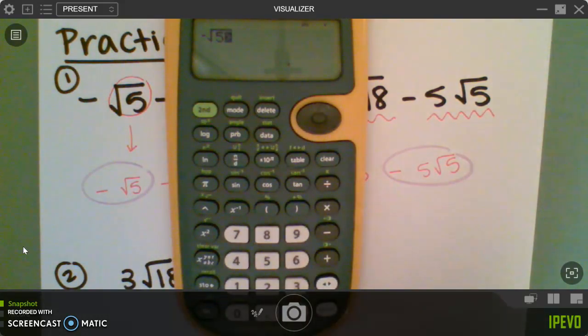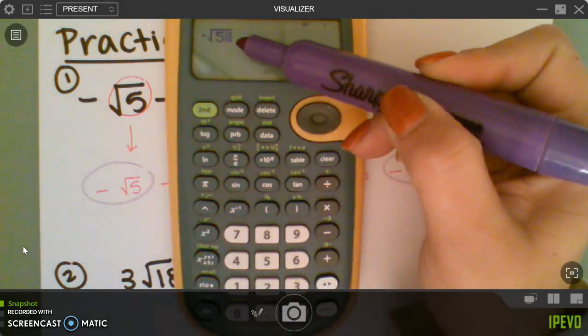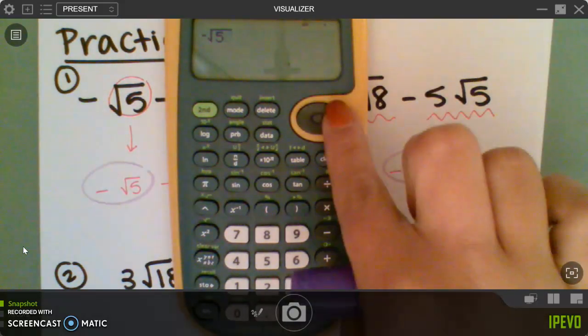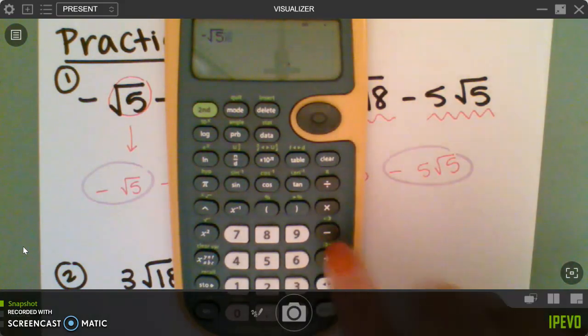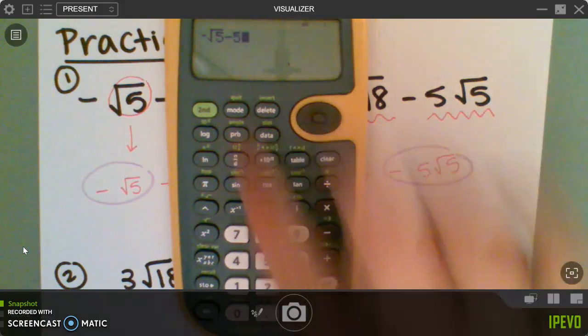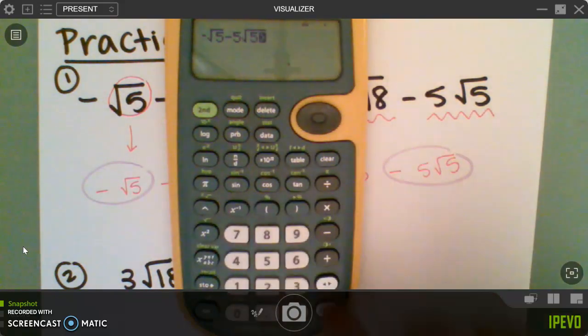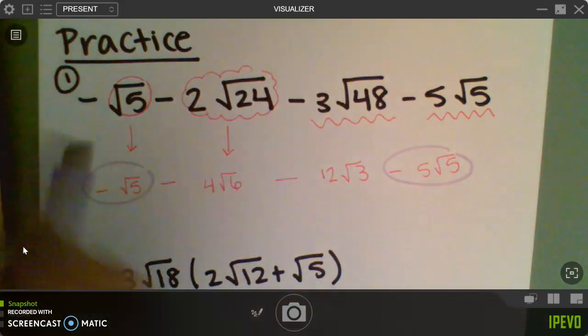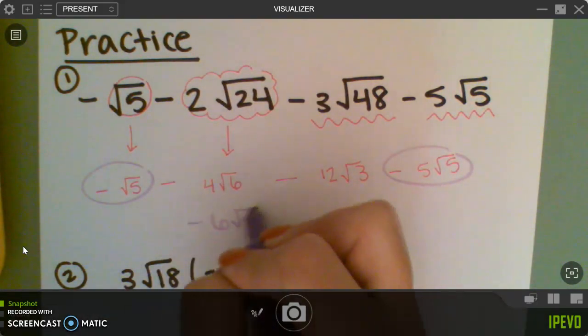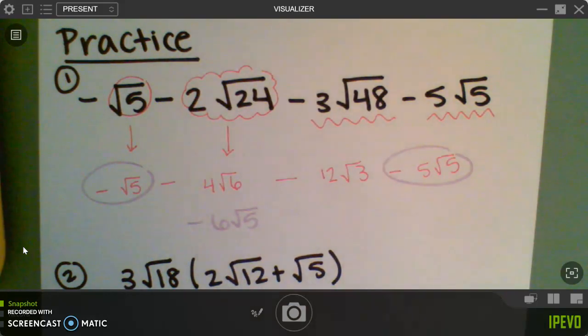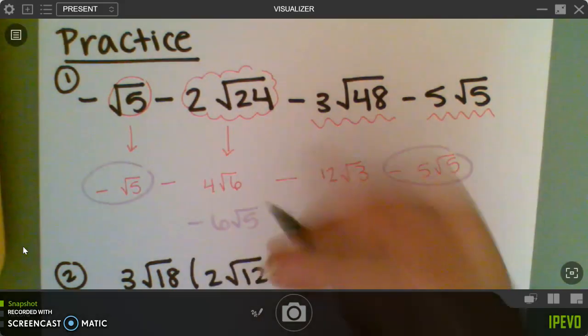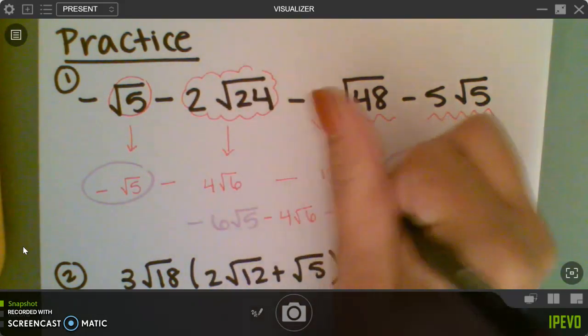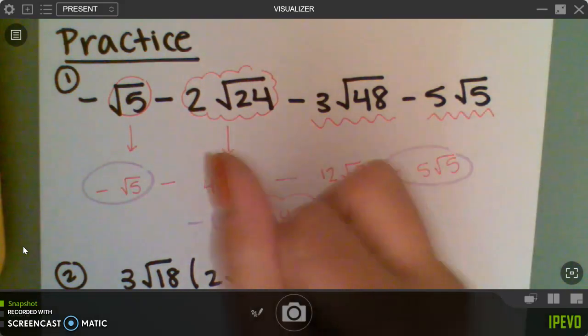So in my calculator, I'm going to do a negative and then the square root of 5. And notice how it is flashing right now, I'm still under the root. To put this part in, I have to be out, so you're going to press right here to the right. Minus 5, square root of 5, enter. So that gives me a negative 6 root 5. So I have a negative 6 root 5 that the calculator gave me, and then these other two are just going to come down: minus 4 root 6, minus 12 root 3. And this is now your final answer.